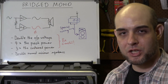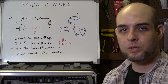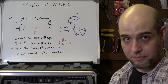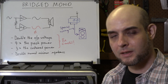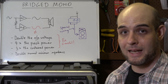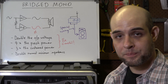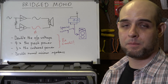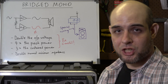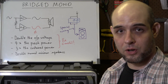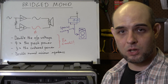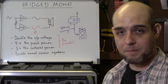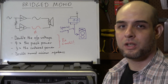In bridge mono mode, you are using the two amplifier channels effectively as one large amplifier. To understand this, you need to understand what the amplifier is actually doing to the loudspeaker cone. Under normal circumstances, when you present a positive voltage to the input of the amplifier, the amplifier channel generates an electromotive force that moves the loudspeaker cone forwards.